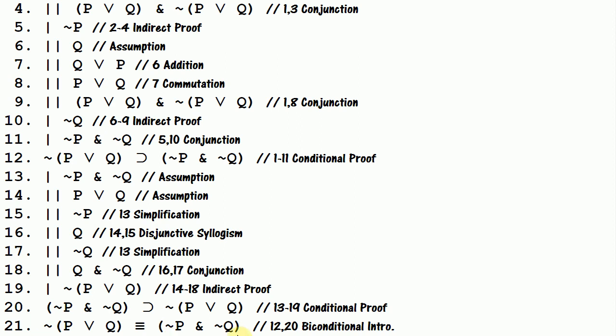And that lets us conclude: if not p and not q, then neither p nor q, from the conditional proof. Now that we have completed two conditional proofs going from one part of the biconditional to the other, we can conclude that neither p nor q is equivalent to not p and not q. And now, after a word from our sponsor, we will take a look at a proof for the other form of De Morgan's theorem.